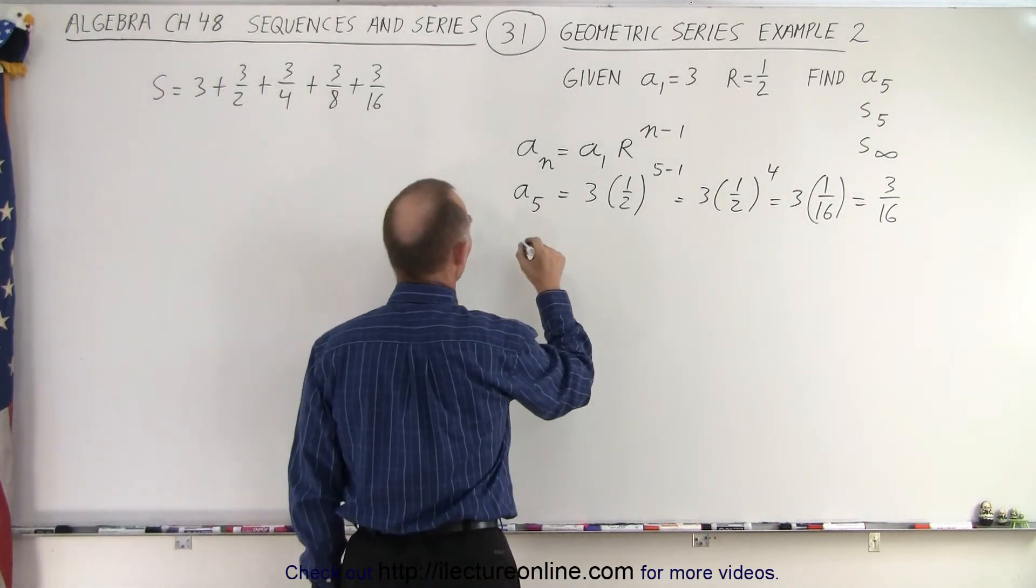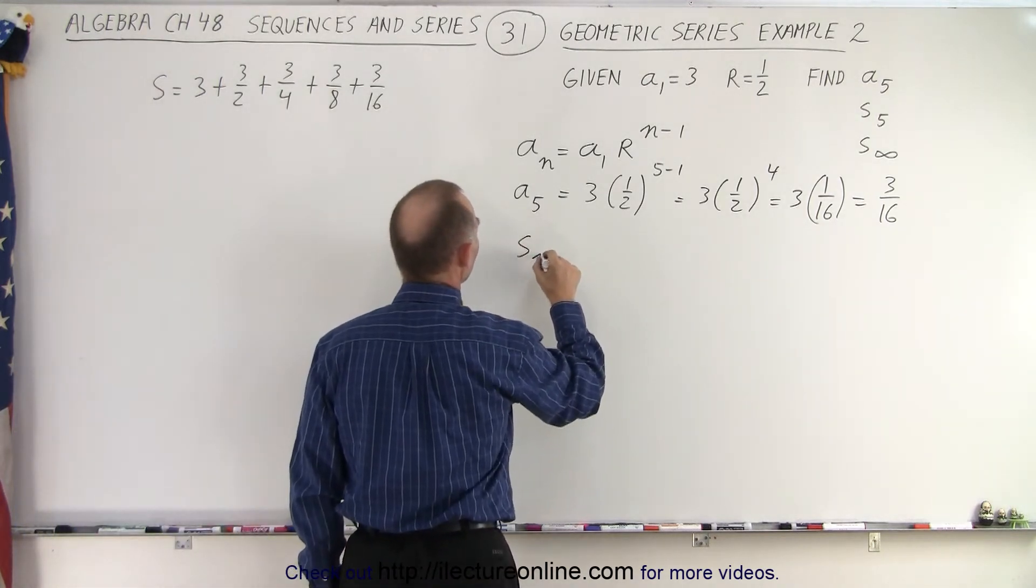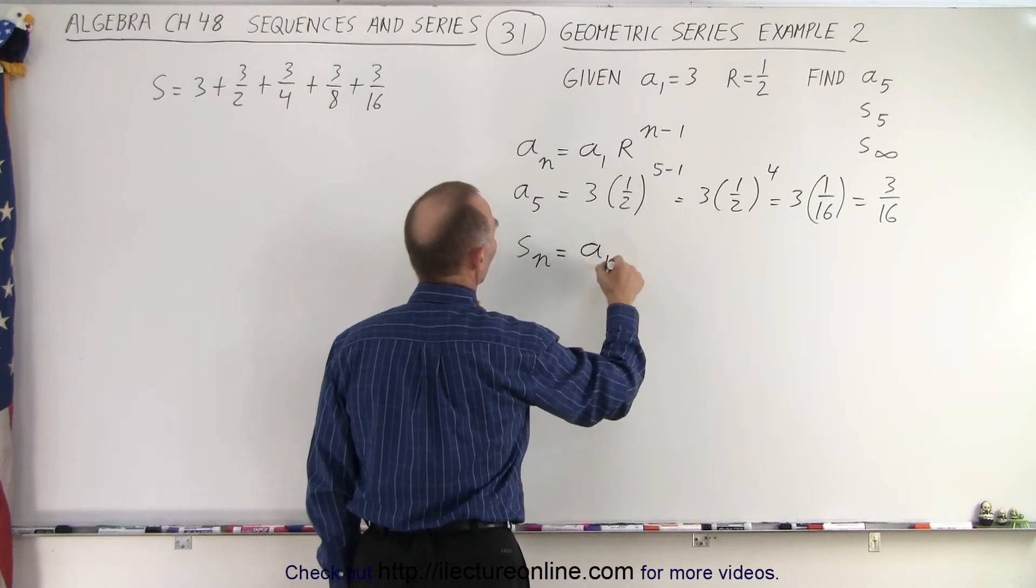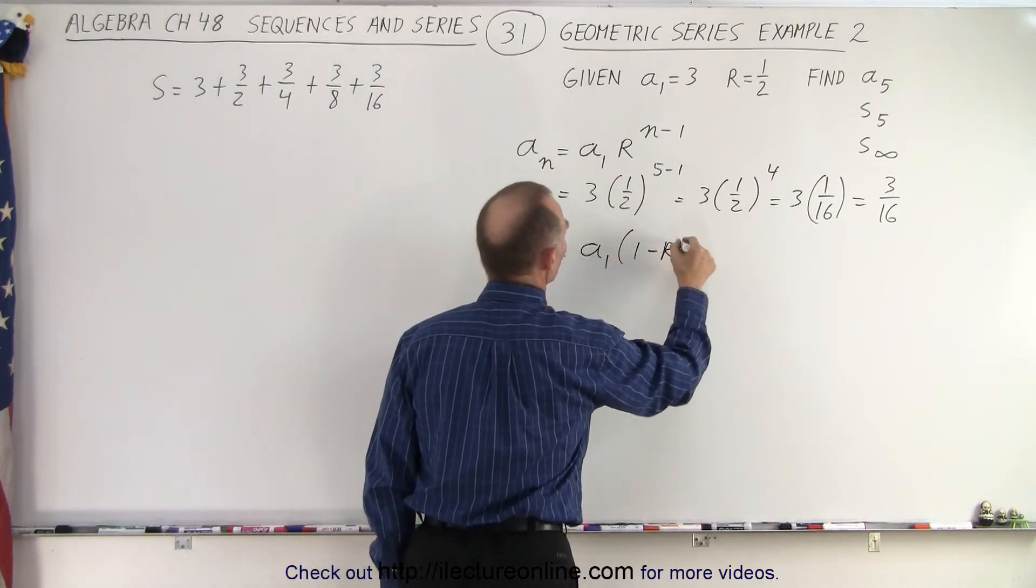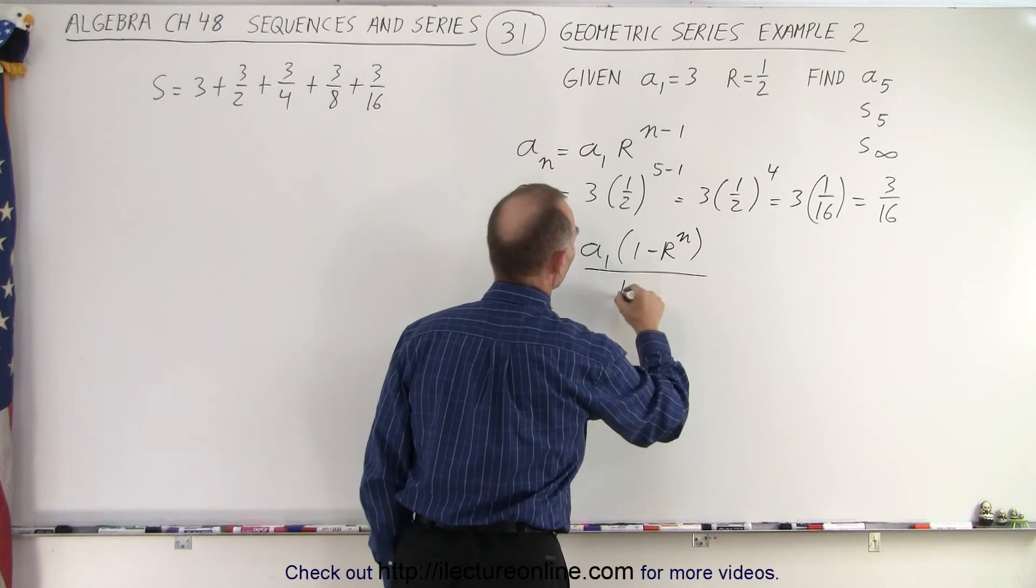We can say that s sub n is equal to a sub 1 times 1 minus r to the n power divided by 1 minus r.